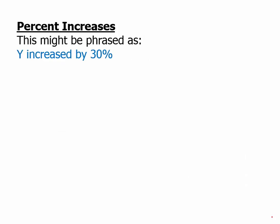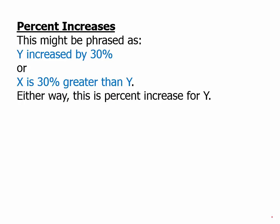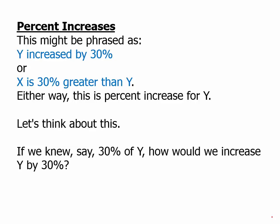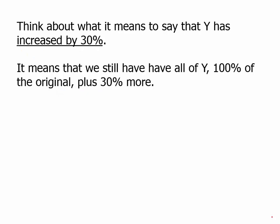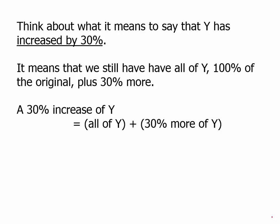Percent increases. This might be phrased as 'Y increased by 30 percent' or 'X is 30 percent greater than Y.' Either one of those is a statement of a percent increase, and either way Y was increased. Think about what it means to increase Y by 30 percent — it means we still have all of Y, 100 percent of the original, plus 30 percent more. So a 30 percent increase of Y equals all of Y plus 30 percent more of Y.